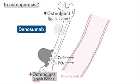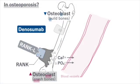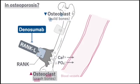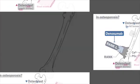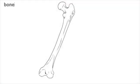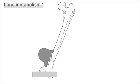What is denosumab? Denosumab is a RANK-ligand antibody drug. Before discussing the pharmacological action, let's review the molecular mechanism of osteoporosis.